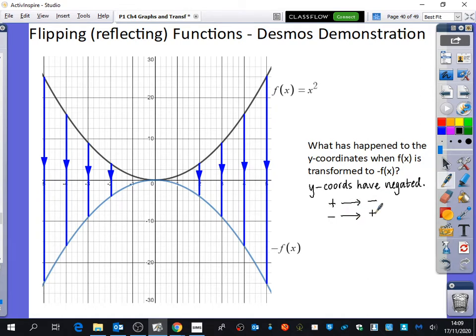There's only one exception. If it was zero, it just stayed at zero. You can't negate zero, it just stays at zero. So everything has like flipped over.